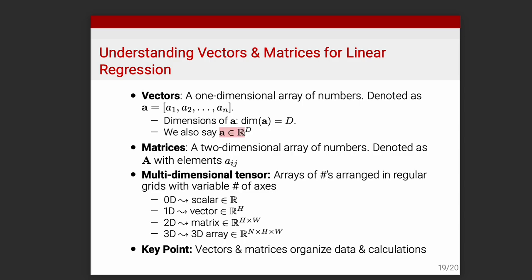You also have matrices, which have multiple dimensions. An important kind of matrix in regression is the data matrix, where each row represents a unit and each column represents a variable — so v1, v2, and so on. Every unit has an entry for variable one, an entry for variable two, an entry for variable three. That's the matrix.